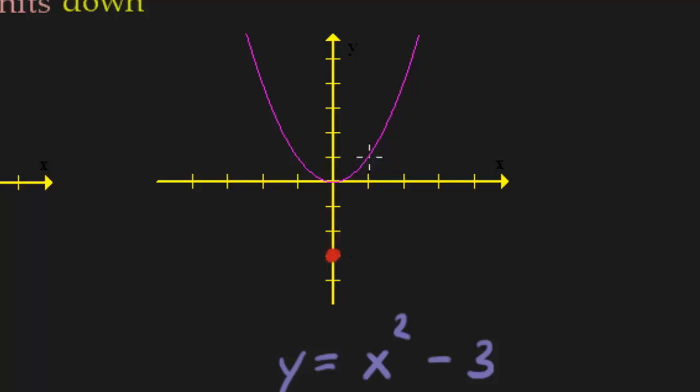1,1, we go down 3. Puts me right there. 2,4, we go down 3. Puts me at 2,1. Over here, down 3.